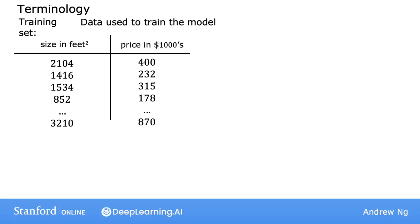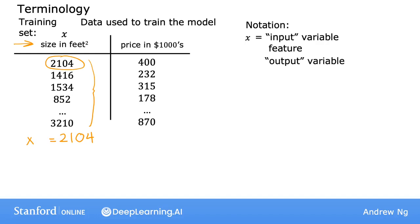In machine learning, the standard notation to denote the input is lowercase x, and we call this the input variable. It's also called a feature or an input feature. For example, for the first house in your training set, x is the size of the house, so x equals 2,104. The standard notation to denote the output variable, which you're trying to predict, which is also sometimes called the target variable, is lowercase y. And so here y is the price of the house. And for the first training example, this is equal to 400, so y equals 400.